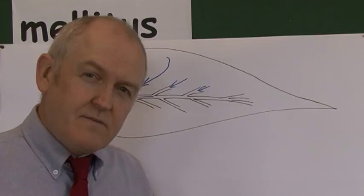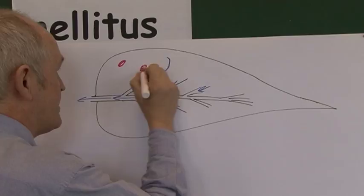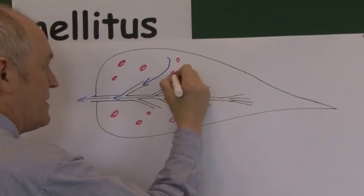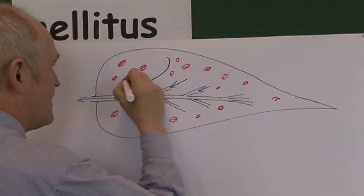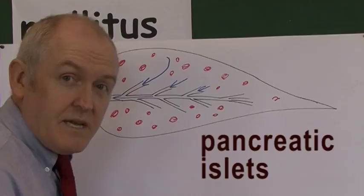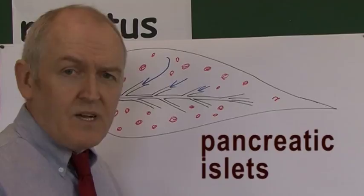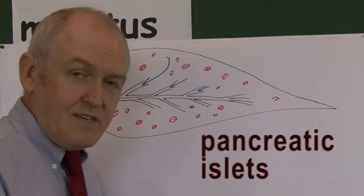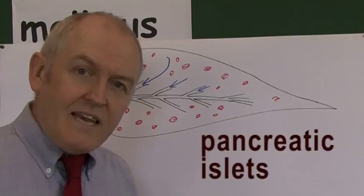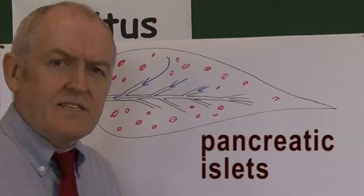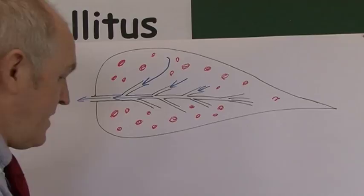Throughout the pancreas, there are about a million little dots called islets — the pancreatic islets, also known by the old-fashioned name 'islets of Langerhans'. These days we tend to just call them pancreatic islets. They are not exocrine like the acinar cells; they are endocrine. About 10% of the mass of the pancreas is these pancreatic islets — the endocrine tissue of the pancreas.